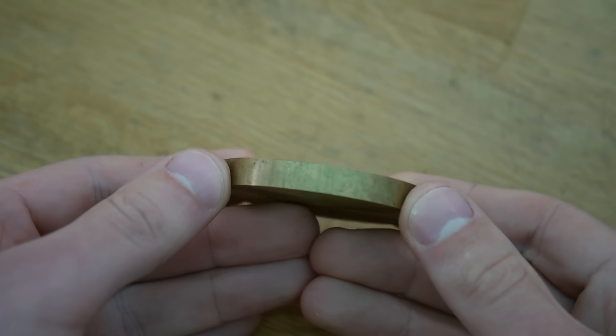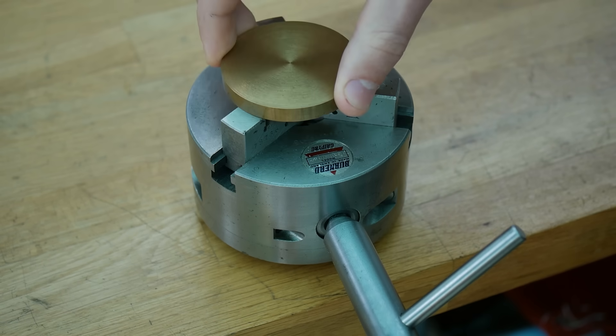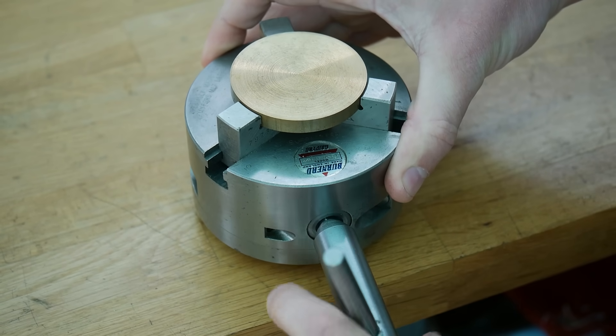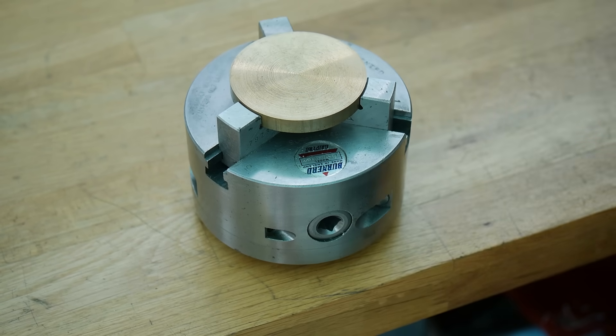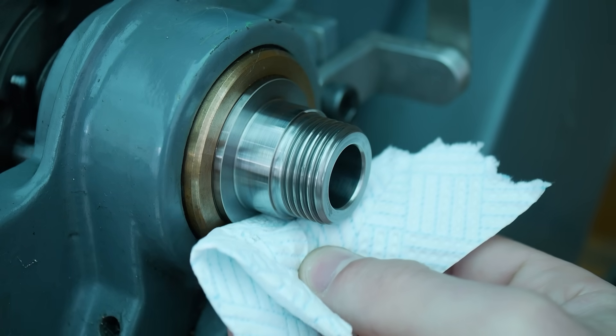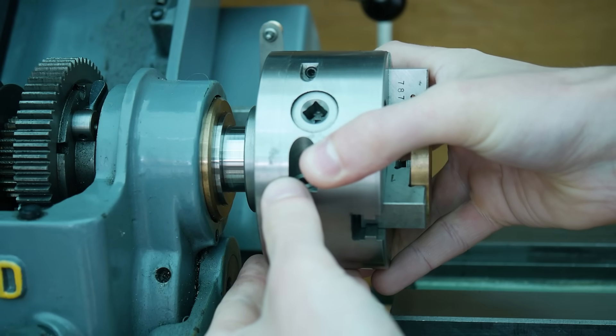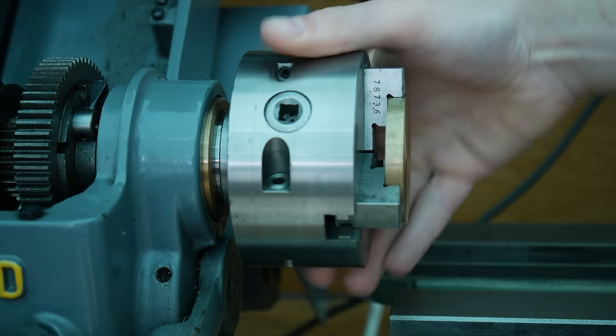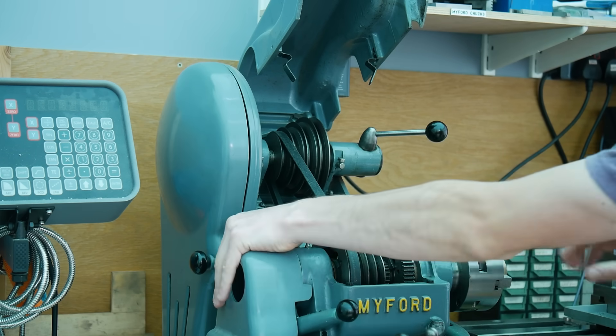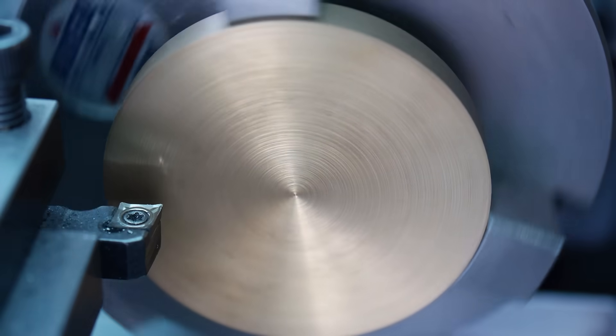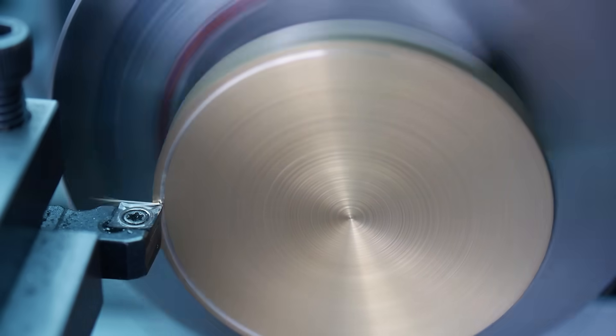A watch essentially consists of three key sub-assemblies. The escapement and balance wheel assembly is responsible for time regulation. The gears, synonymous with a watch movement, are responsible for transferring force from the power reserve to the escapement, and the power reserve itself is where the energy is stored to drive the watch. In a mechanical watch, this is done with a spring contained in a barrel.